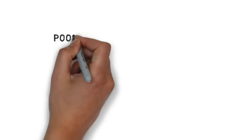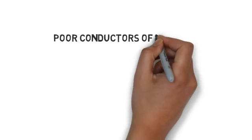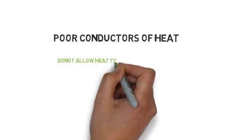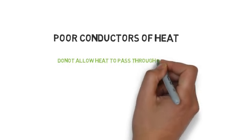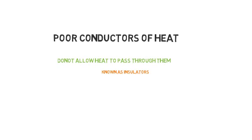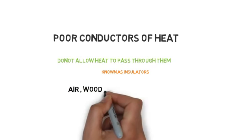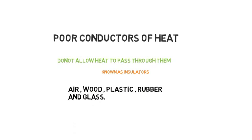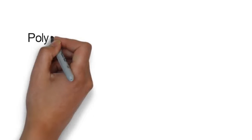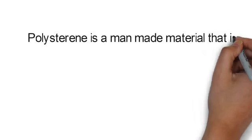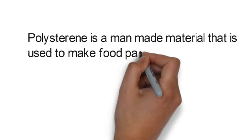Now we will discuss poor conductors of heat. Materials which don't allow heat to pass through quickly are poor conductors of heat — these are known as insulators. Air, wood, plastic, rubber, and glass are poor conductors of heat. Polystyrene is a man-made material used to make food packaging.